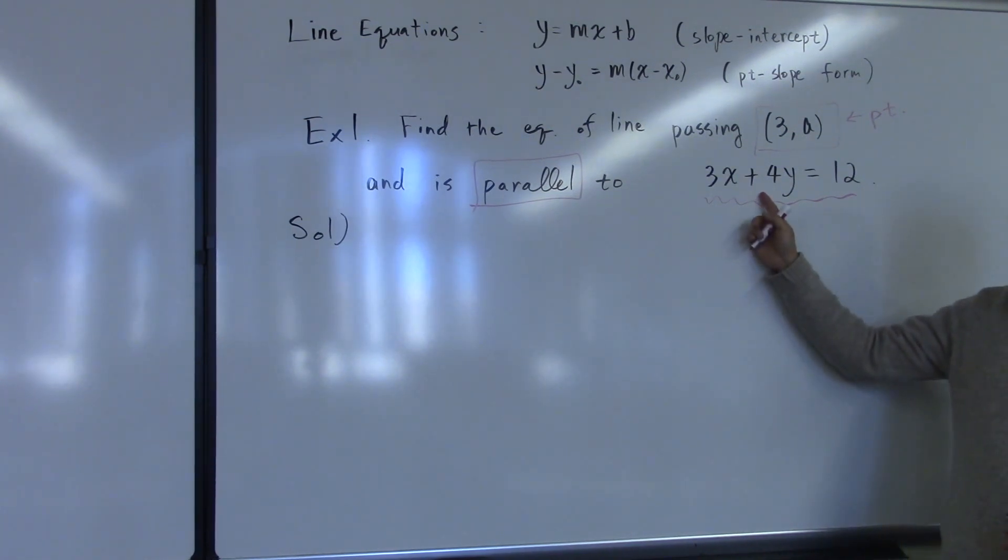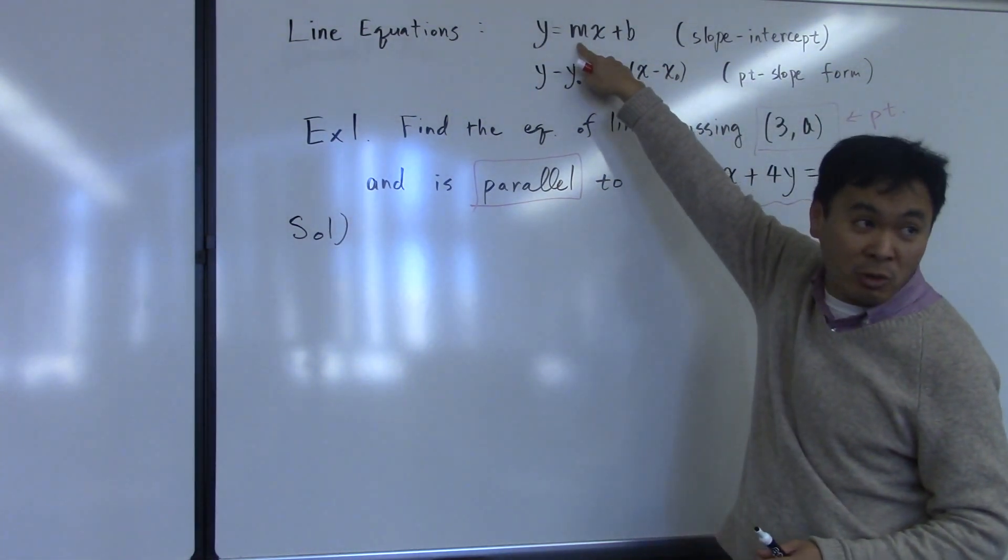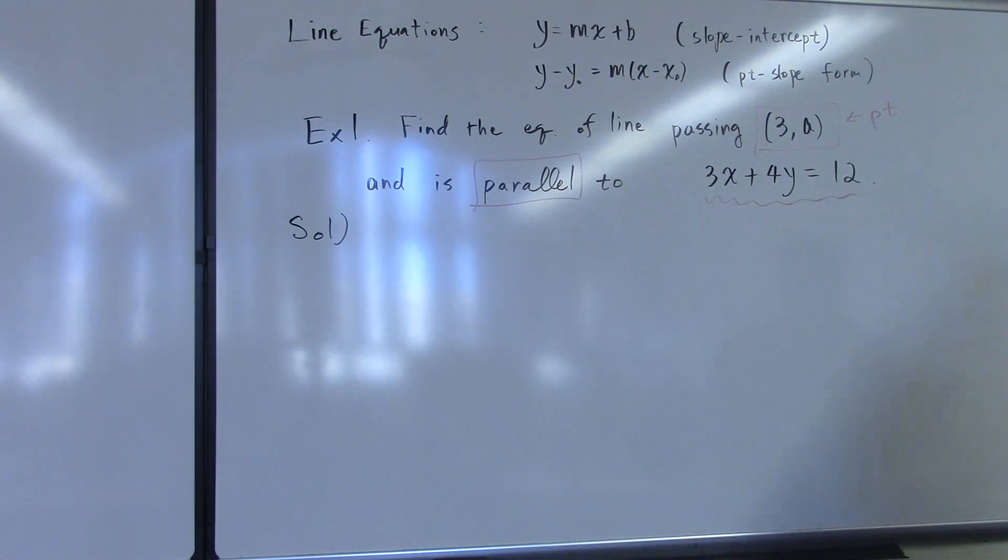However, if you leave it in this form, it's hard to figure out what the slope is. You have to solve for y to put it into slope-intercept form, and once you have it changed to slope-intercept form, this value m is what we call the slope. Let's do that.